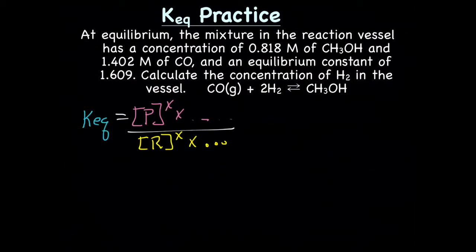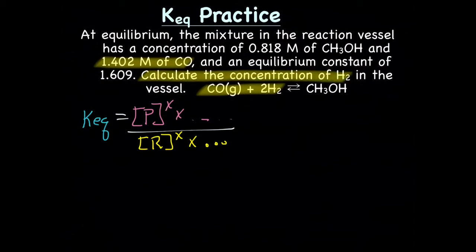We'll start with the reactants. We have CO2. Does our story tell us anything about CO2? It says we have 1.402 molar CO2. And our H2, our other reactant, says calculate the concentration of, which means it's going to be our X. If we look at the products, CH3OH, let's see, does it tell us anything about that? Yep, it says we have 0.818 molar of CH3OH. And the last is our equilibrium constant, which is 1.609.